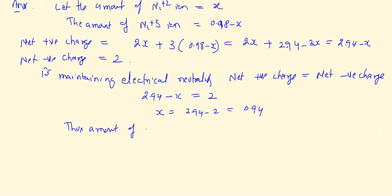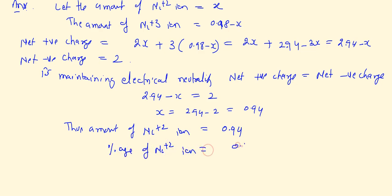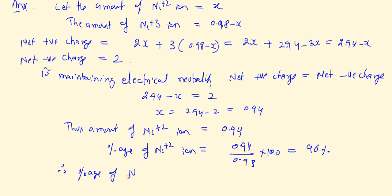Amount of Ni²⁺ ions = x = 0.94. Percentage of Ni²⁺ ions = (0.94 / 0.98) × 100 ≈ 96%. Therefore percentage of Ni³⁺ ions = 100 − 96 = 4%. So 4% of total Ni²⁺ ions have changed to Ni³⁺ ions.